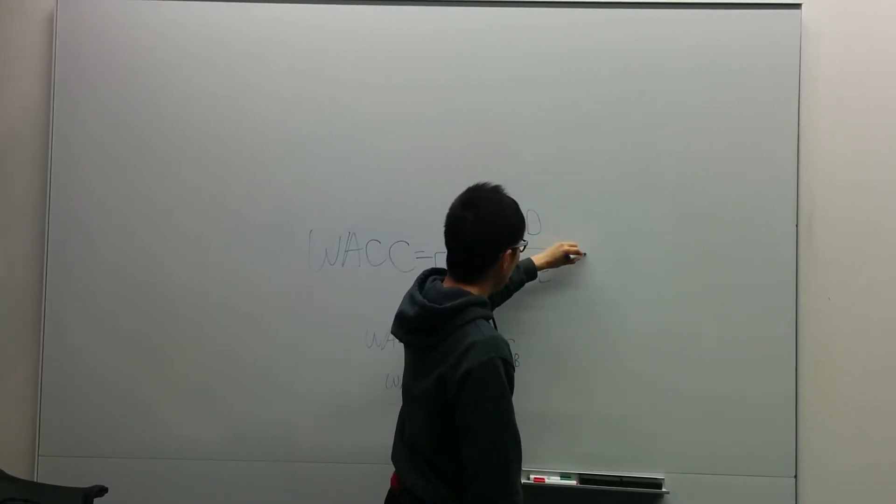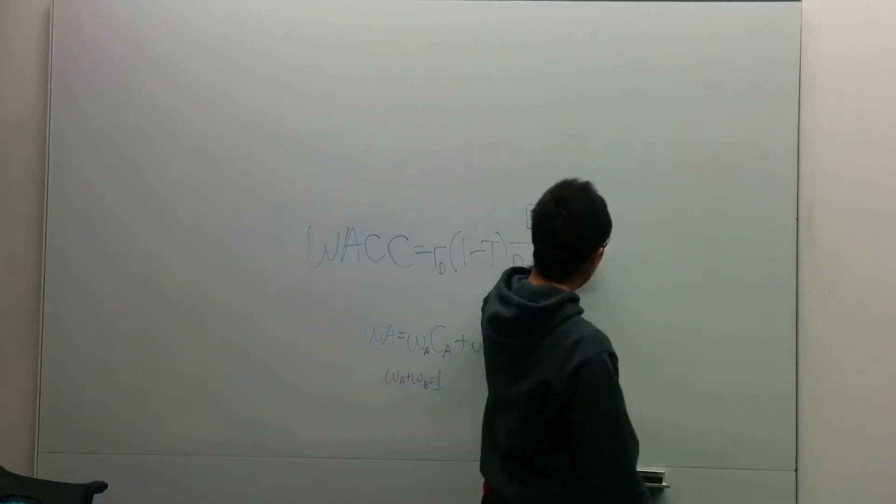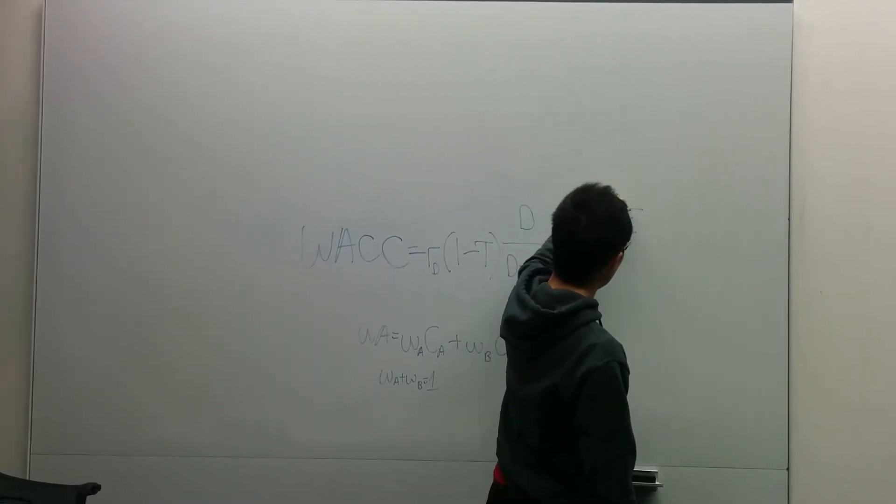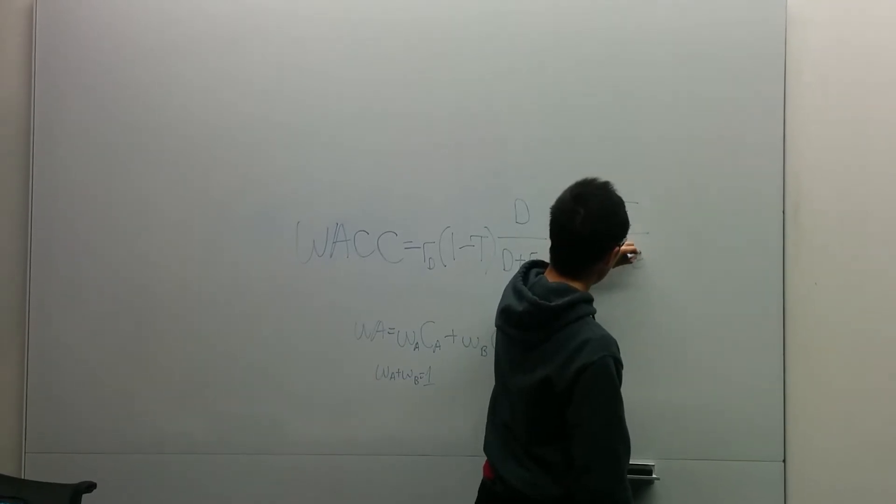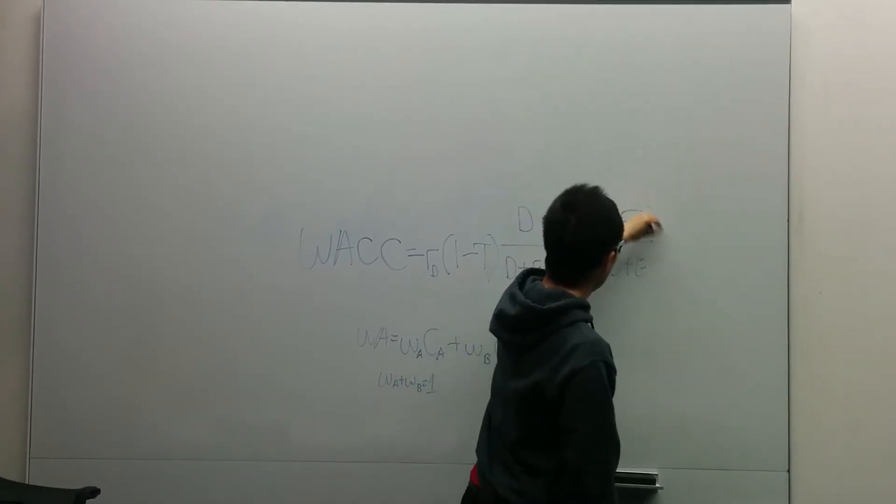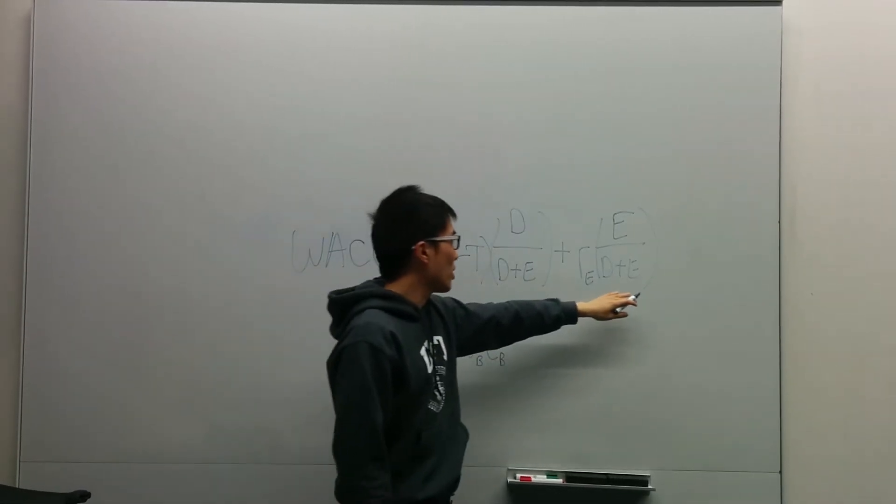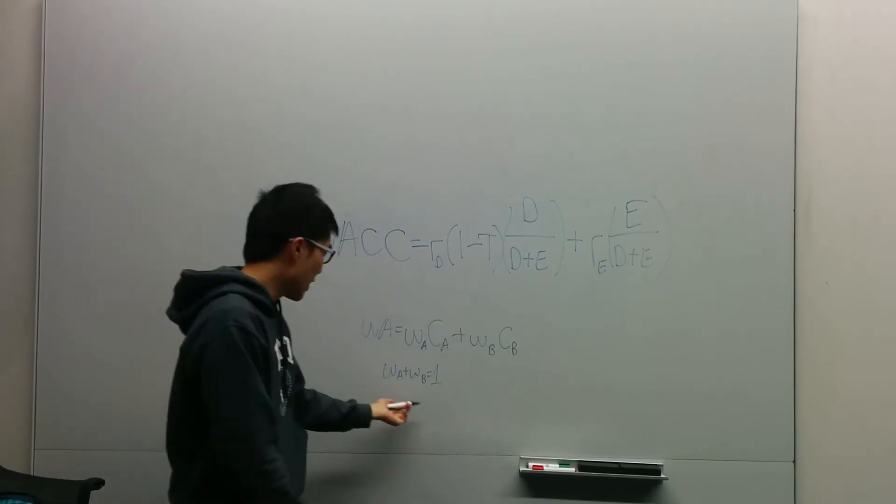And then you add in some math length to this part, and then you add in the cost of equity, and then you look at your equity over your debt plus equity. So notice that these two, this one is like the weight for the first one and we need for the second one. And then these two weights add up to 1, which satisfies the condition here.